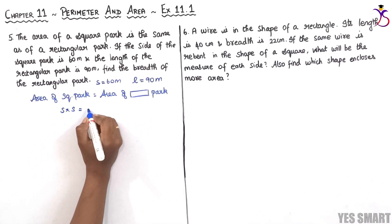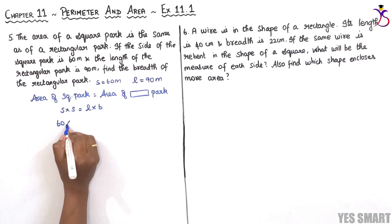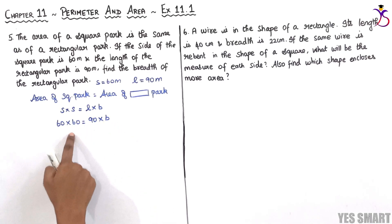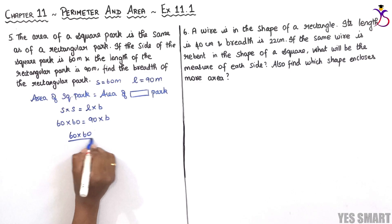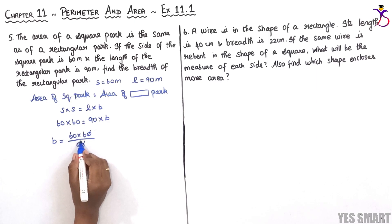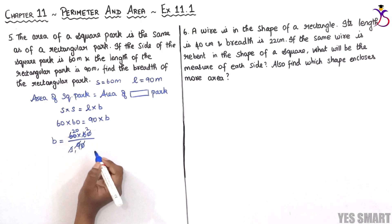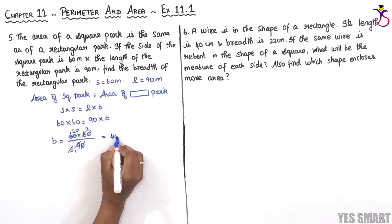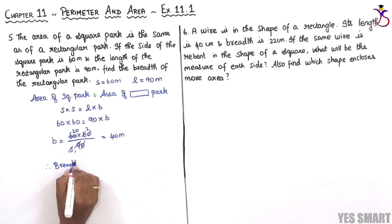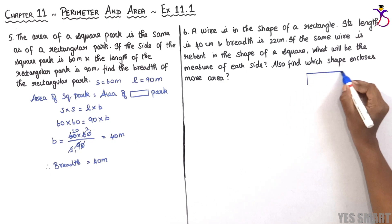Area of square park is s into s equals area of rectangular park, which is L into B. Substituting: 60 into 60 equals 90 into B. Transposing 90, breadth equals 60 into 60 divided by 90. Cancelling zeros, we get breadth equals 40 meters.